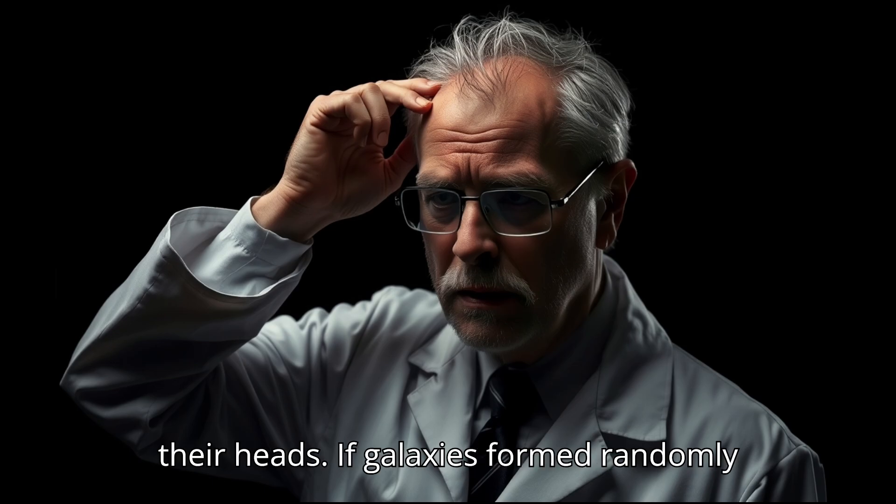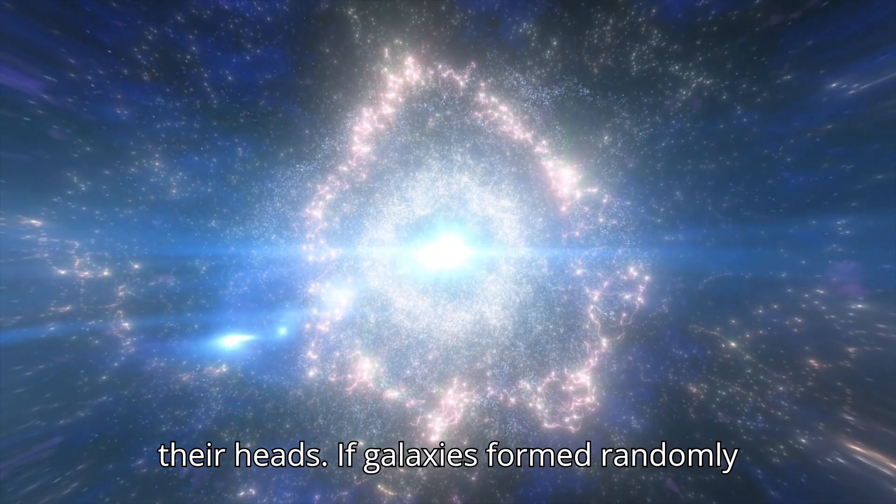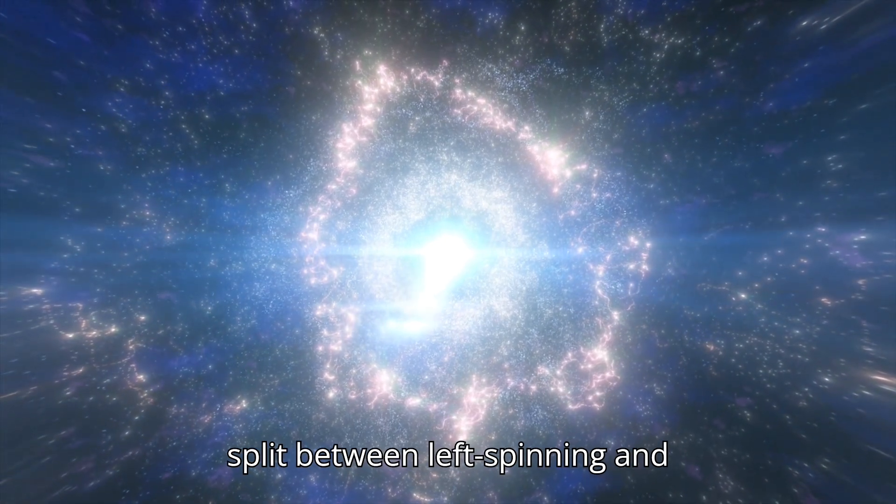If galaxies formed randomly after the Big Bang, they should be evenly split between left-spinning and right-spinning. But they're not. So what's going on?